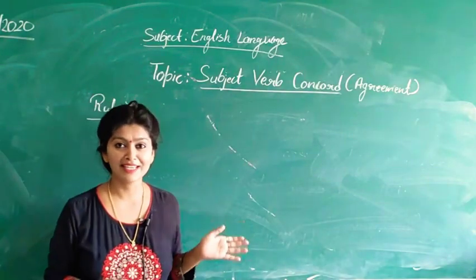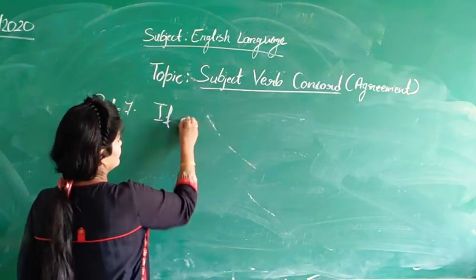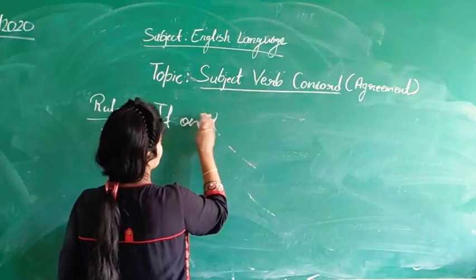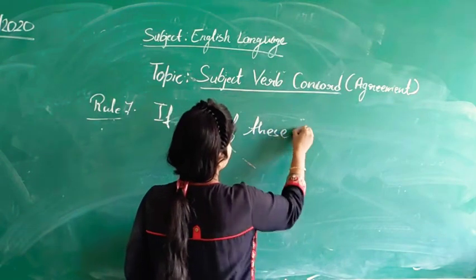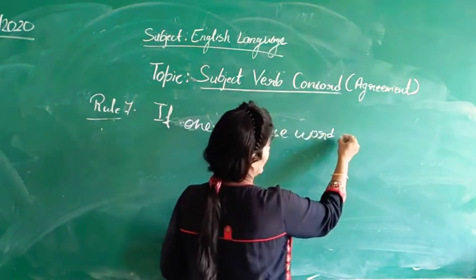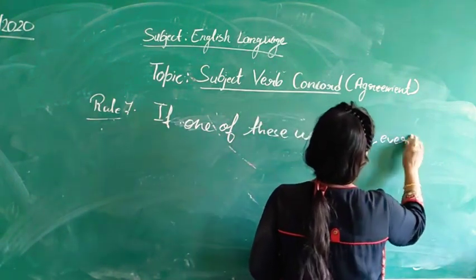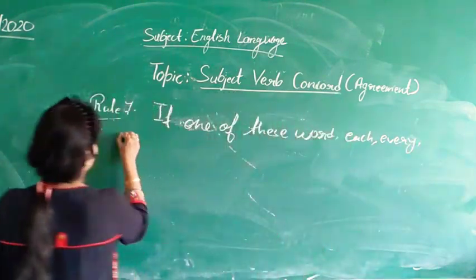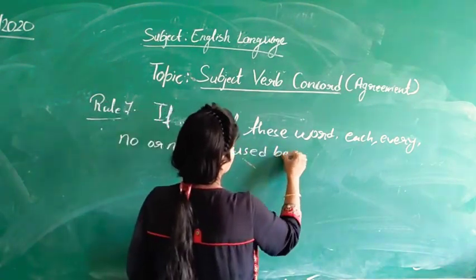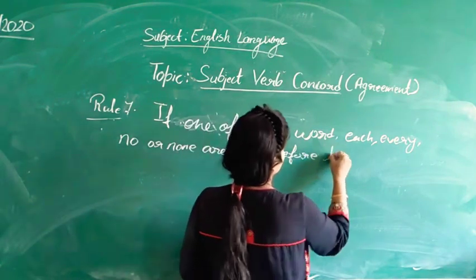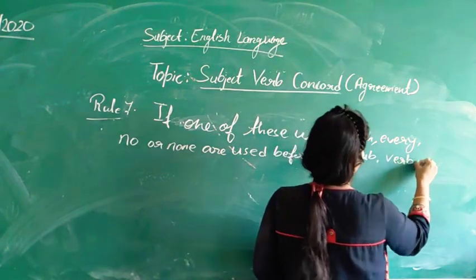Let's see what rule number 7 states. Rule number 7 states: if one of these words like each, every, no, or none are used before the subject, the verb will be singular.